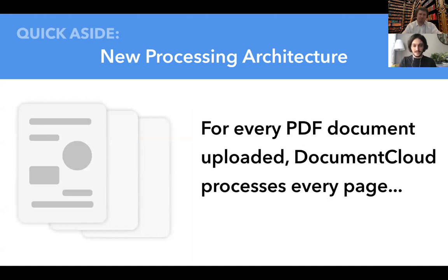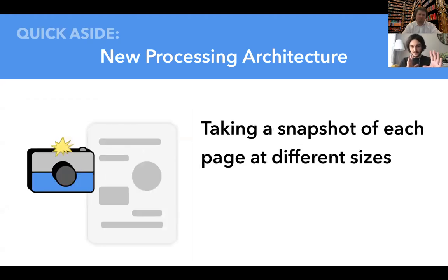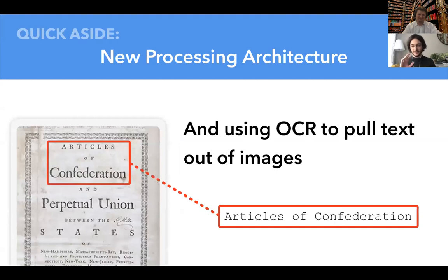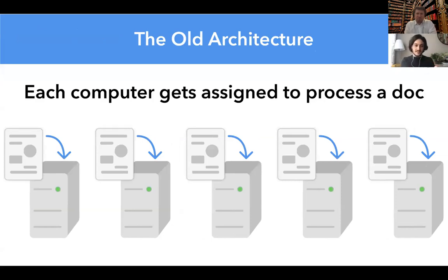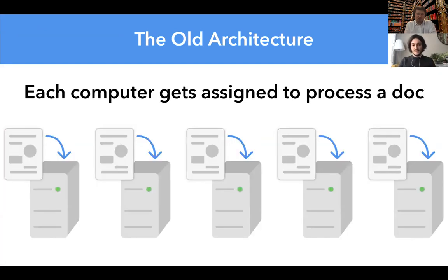For every page you upload into Document Cloud, we first take snapshots of the pages at different sizes, which then feeds into the viewer. And then we use optical character recognition — OCR — to pull the text out of the images. This is basically taking a scanned document and converting it into text you can search through. Previously, Document Cloud did processing by maintaining a fleet of a fixed number of computers. As documents get uploaded, they get assigned to computers that aren't processing anything currently, and then they get processed. But what happens if too many documents are uploaded simultaneously?